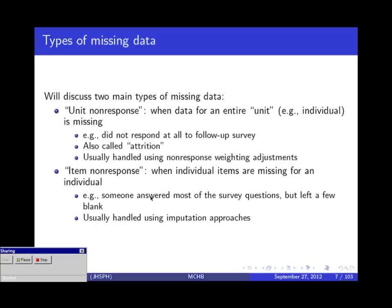There are two main types of missing data we'll cover. The first is unit nonresponse — a situation where you basically don't have any data at a given time point for a particular person. This is the case where you had a list of people you were trying to contact for an initial or follow-up survey, and for some of them you just can't find them at all. This is also called attrition in longitudinal settings. Unit nonresponse is what's called a fairly simple missing data pattern — either you have data or you don't.